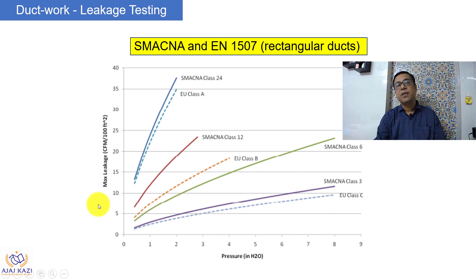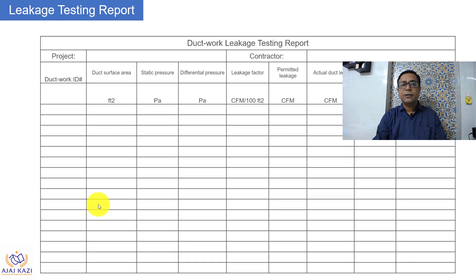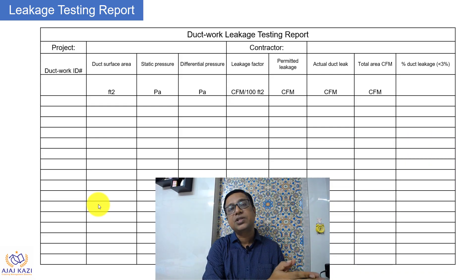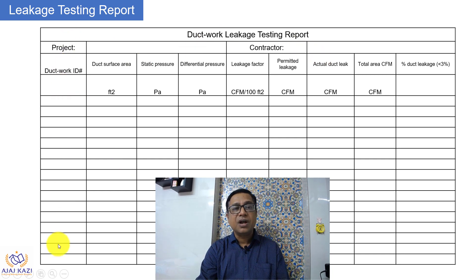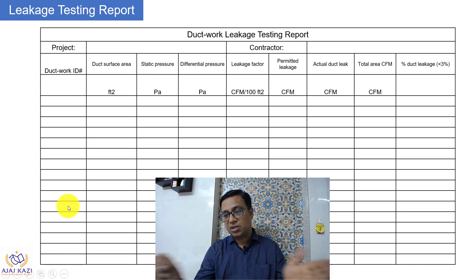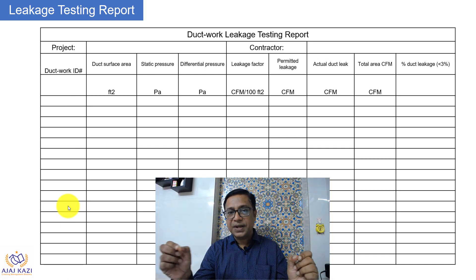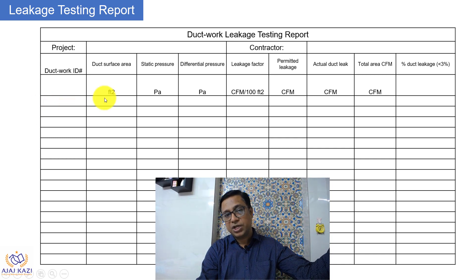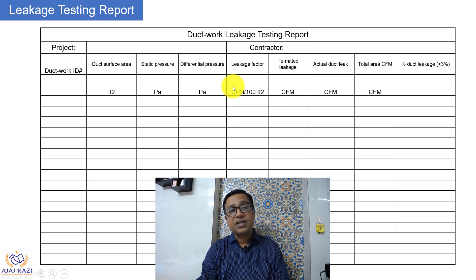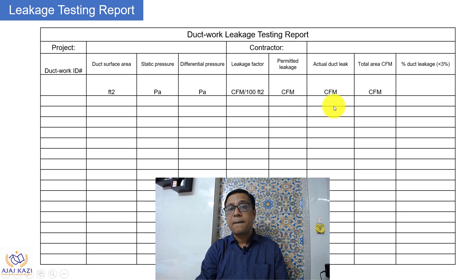SMACNA is one of the important standards which defines the duct leakage rates. SMACNA defines the duct leakage class as Class 24, Class 12, and Class 6. The numbers 24, 12, and 6 define that at one inch water gauge of test pressure, there can be leakage of 24, 12, or 6 CFM per 100 square feet of duct surface. These numbers are the leakage CFMs at one inch water gauge of test pressure per 100 square feet of duct surface.